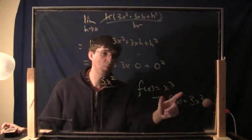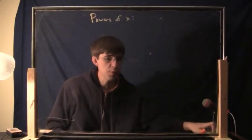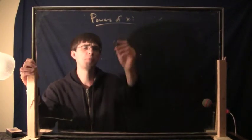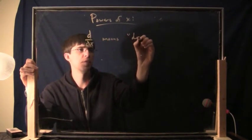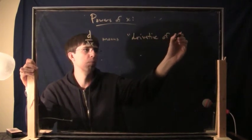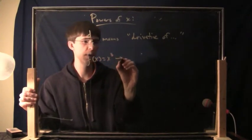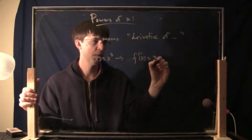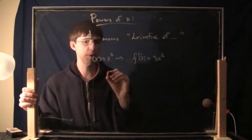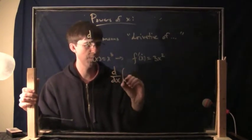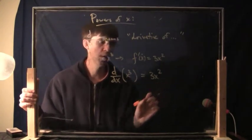What about higher powers of x? There's actually a pattern here. Derivatives of powers of x — we did several examples. Before we talk about the pattern, here's a notation: d/dx means 'the derivative of' whatever you put after it. So rather than writing f(x) equals x³ and then f prime of x equals 3x², you can write d/dx of x³ equals 3x². This notation means exactly the same thing — one nice compact way to say the derivative of x cubed is 3x squared.